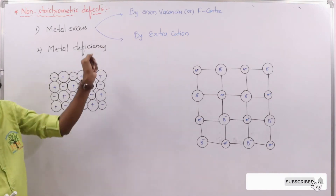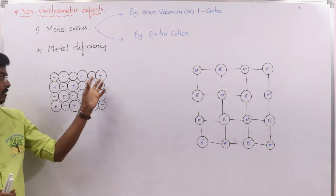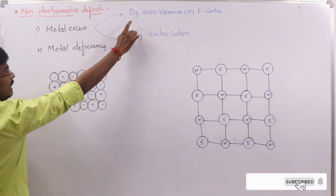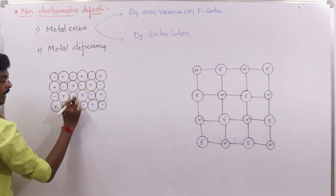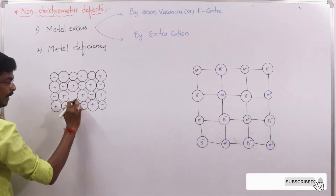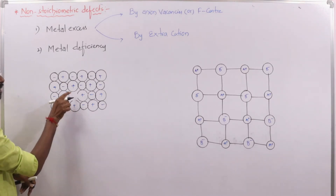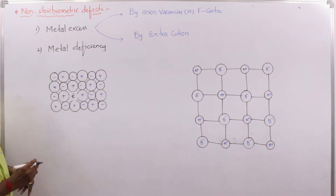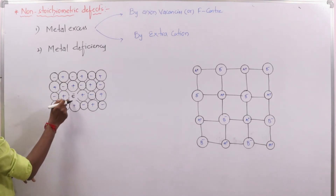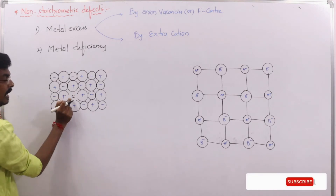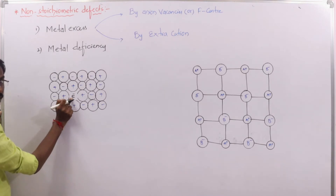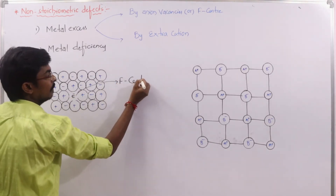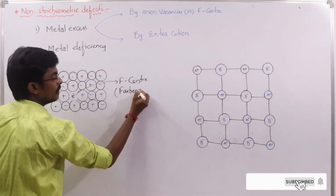Now let us see how metal excess defect occurs by anion vacancy. This is the perfect ideal chemical structure of the solid — an ionic solid where cations and anions are systematically arranged. In anion vacancy, one of the anions vacates from its original lattice site, leaving a hole. That hole is occupied by an electron to maintain electrical neutrality.